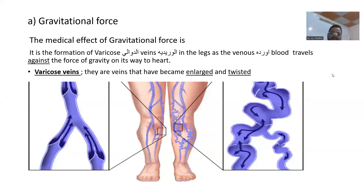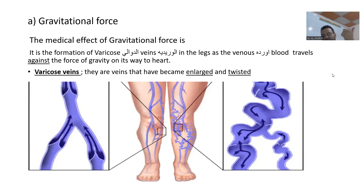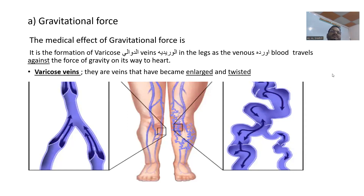By using this we can explain the gravitational force and its relation on the veins and how varicose veins can be made or happen. Now let's give a good definition: varicose veins are veins that have become enlarged. It is a disorder — a kind of sickness — that is twisted and causes some pain.